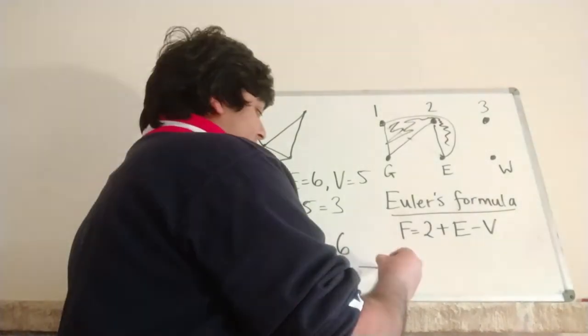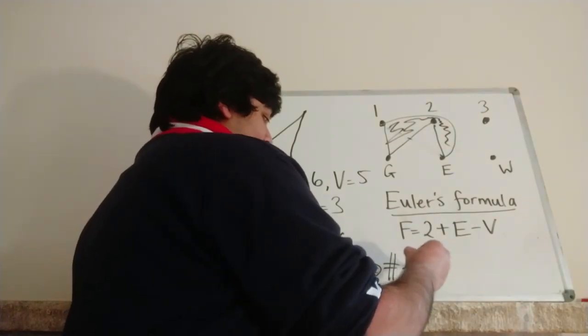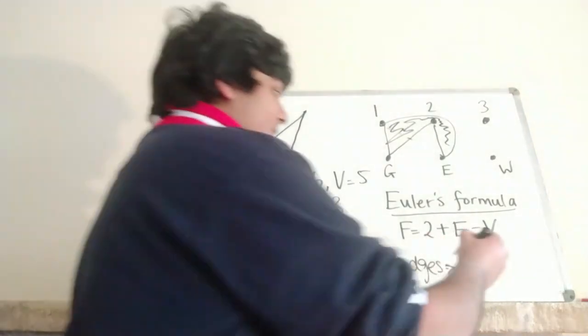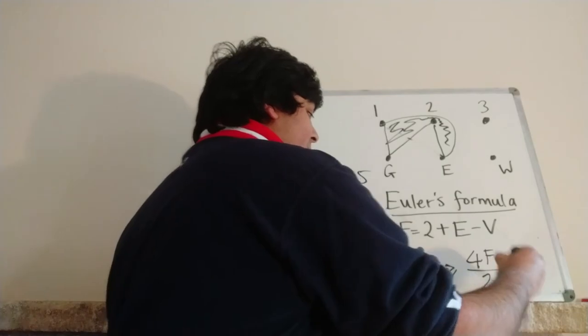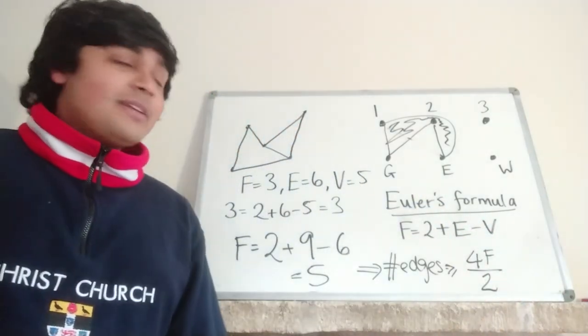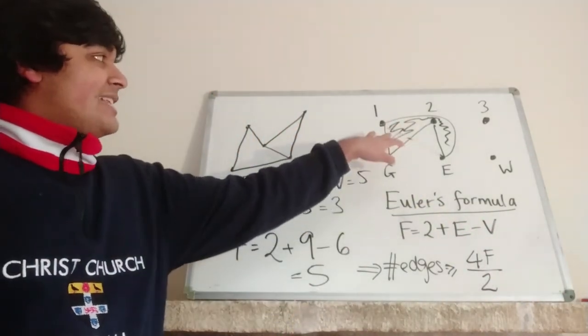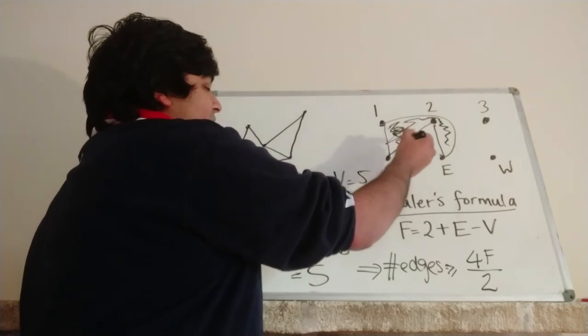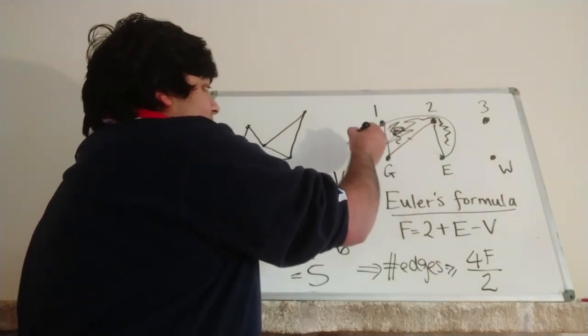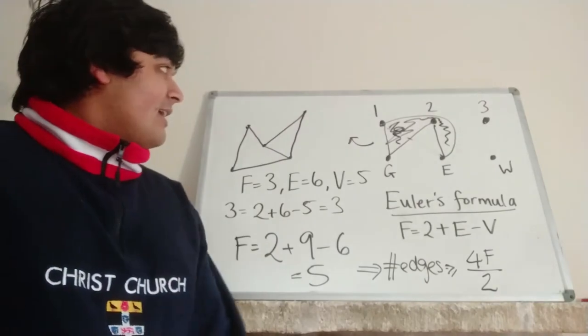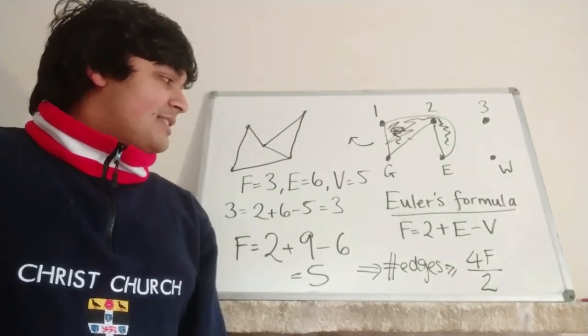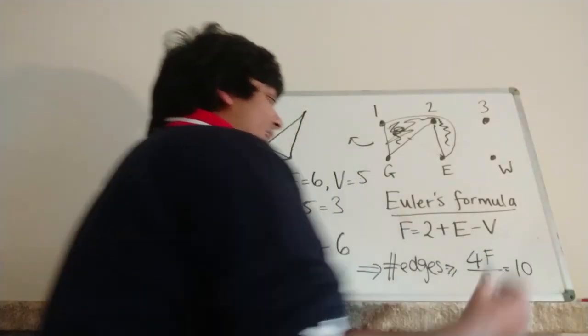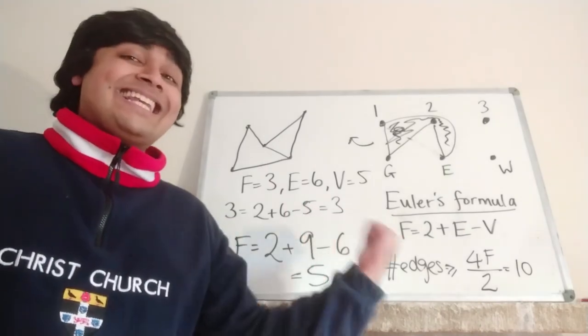So we can work out the number of edges in this graph is going to be at least four times the number of faces, so four times f. But we've got to divide by two. And the reason we have to divide by two is because each edge has sort of two faces adjoining it. So if we look at this edge here, it's got this face here, the thing I've shaded in, but it's also got this unbounded region as well as a face. So it's got two faces. And that's why we've got to divide by two. But we know that f equals five, so this guy here is just 20 over two, which is 10. So we've shown that the number of edges must be at least 10.